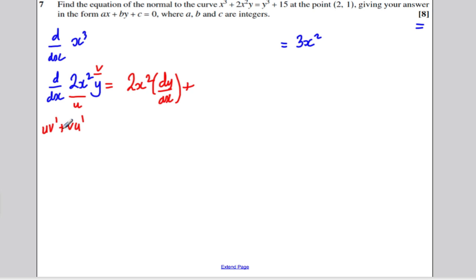And then plus, now you want to keep your y, y times the differential of 2x², which would be 4x. And writing that neatly out there, this would be 2x² dy/dx plus 4xy, tidying that up.